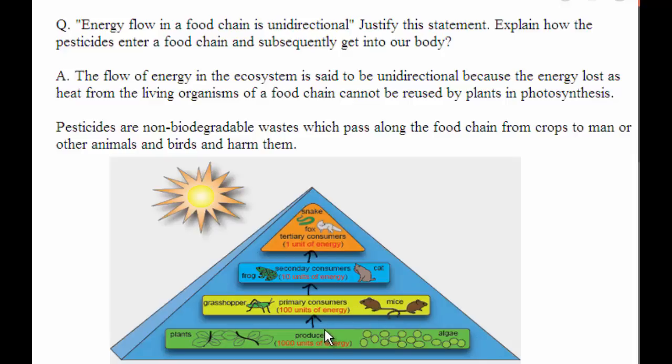The food chain always starts with the producers and ends with the top carnivores. If you see this energy flow diagram, two things become very clear.